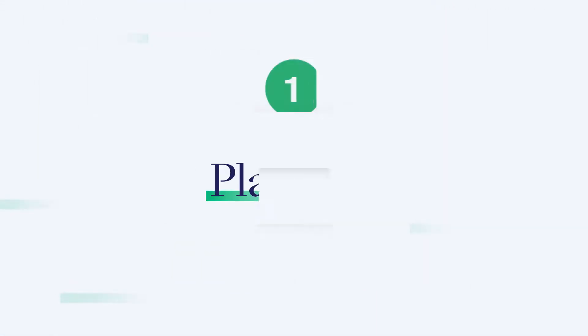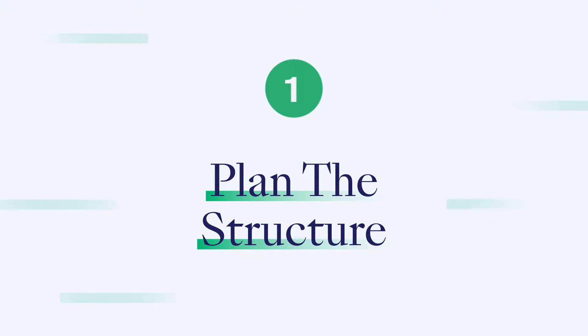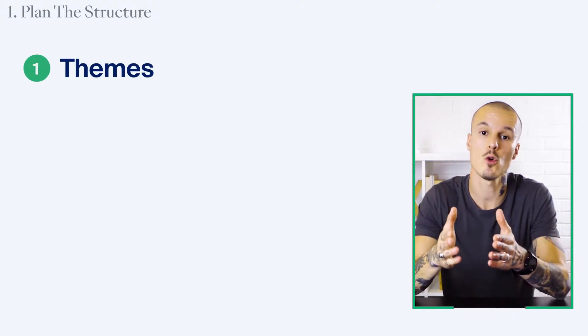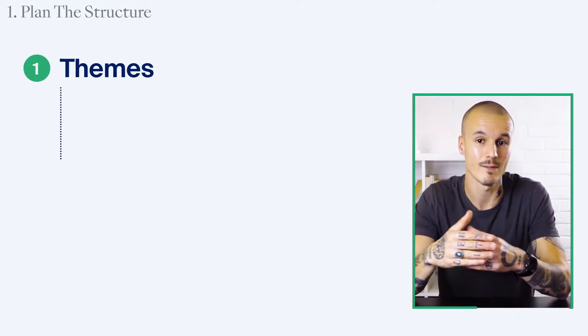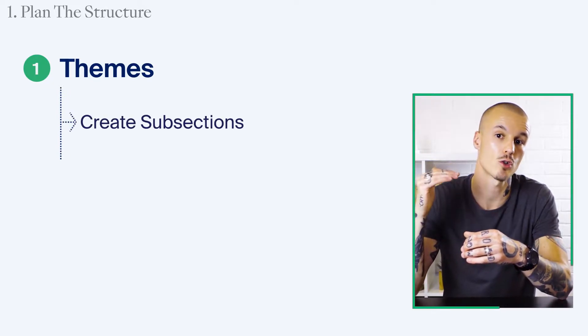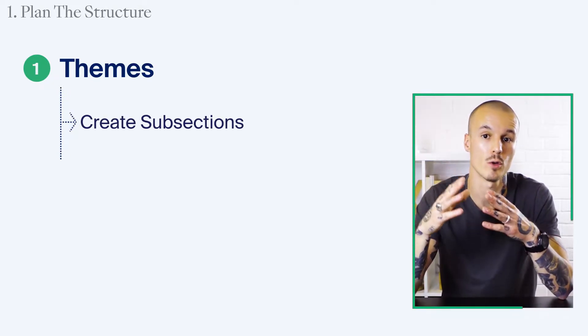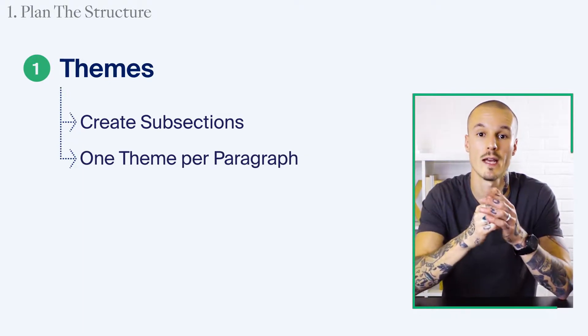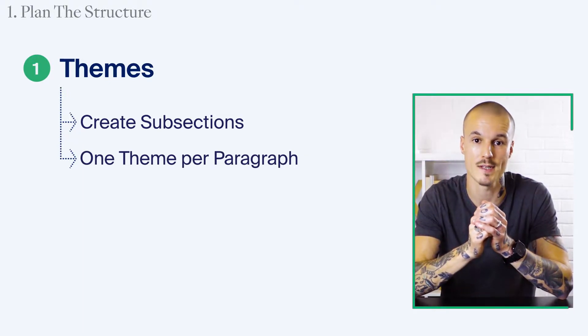Step one: plan the structure. There are a number of ways to organize your paper. Firstly, themes. If you're going to organize your literature review by themes, you need to create subsections or paragraphs within the body of your literature review which address the different themes in your field's research.